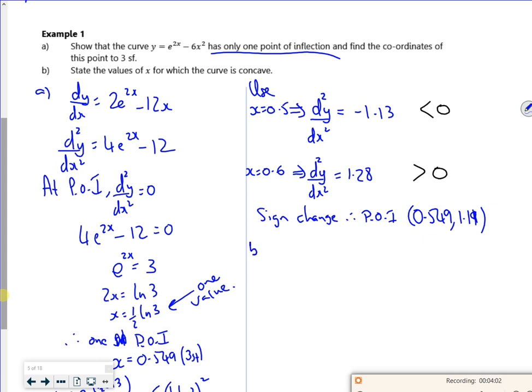So it says for part B, state the values of x for which the curve is concave. So I always remember convex looks like e^x, the gradient is positive. So d²y/dx² is greater than 0. And if you look, d²y/dx² from this here, I think it's like a little x coordinate line.